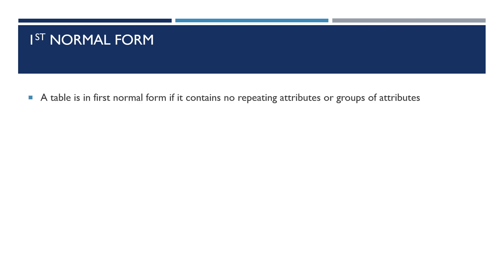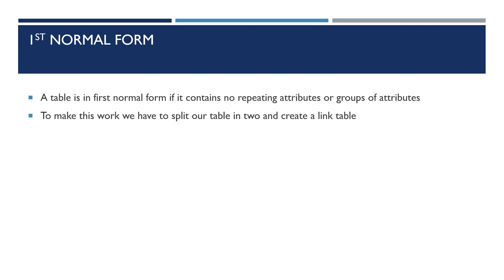Moving to first normal form is the first stage of normalization. A table is in first normal form if it contains no repeating attributes or groups of attributes. Our table in the previous slide contained groups of attributes, so to make this work we have to split our table in two and create a linked table.